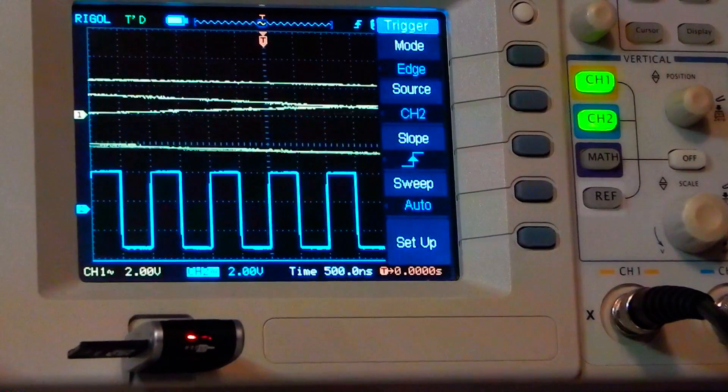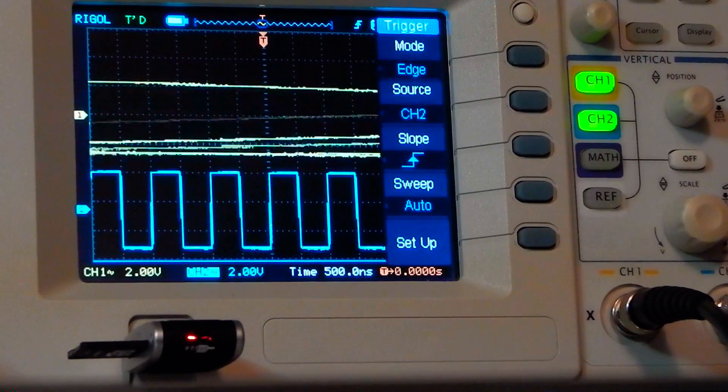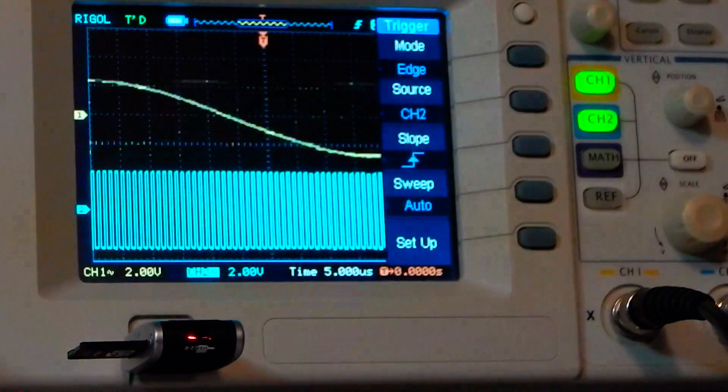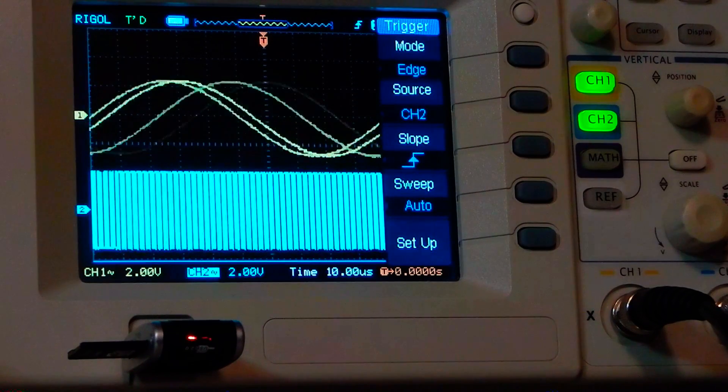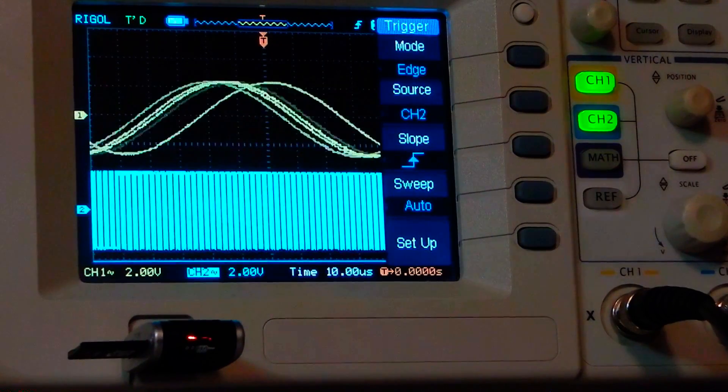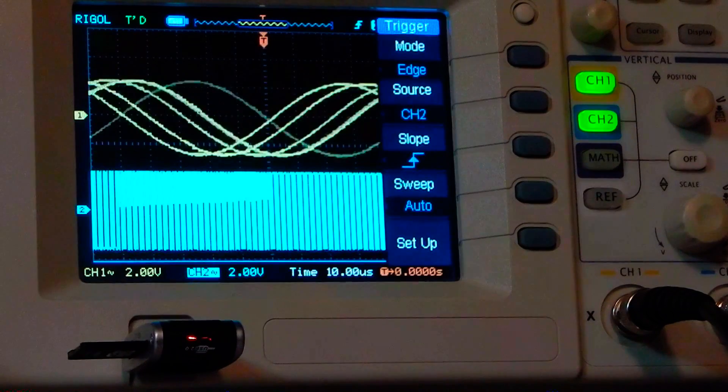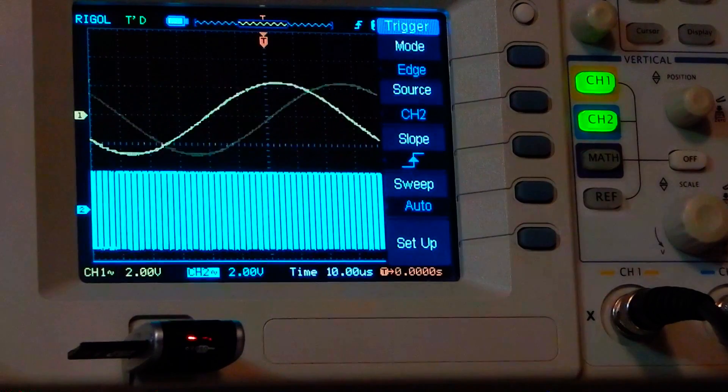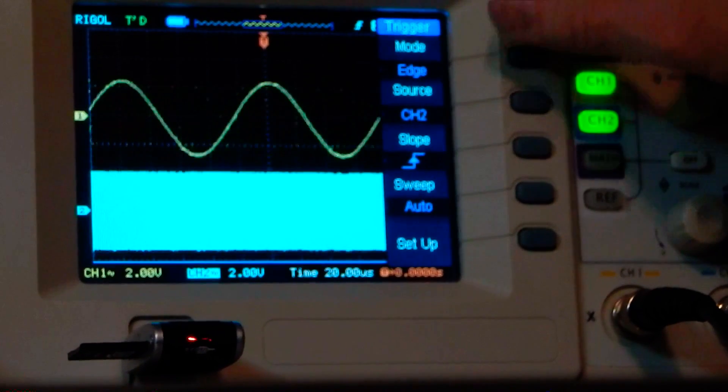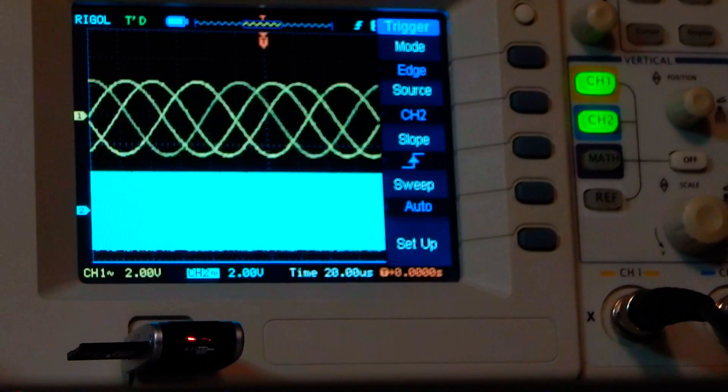Well that's no good because now channel one's kind of messed up. So there is a way to use a mode of triggering here that is available on most oscilloscopes. I just wanted to show it in the Rigol DS-1102E because that's the scope I have. What you would do is under trigger mode...